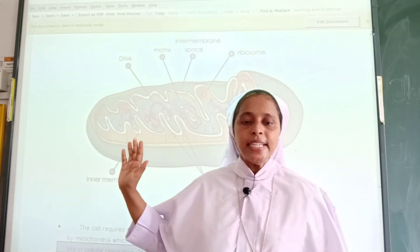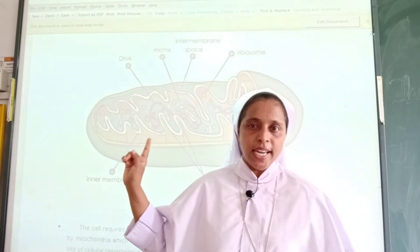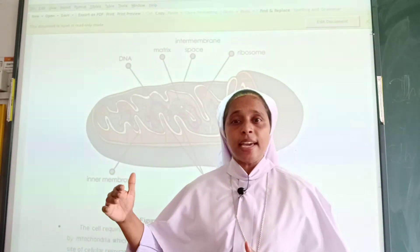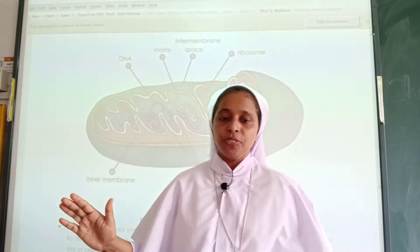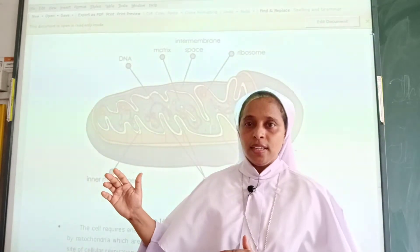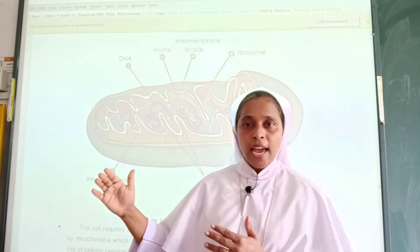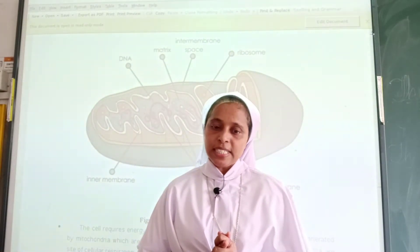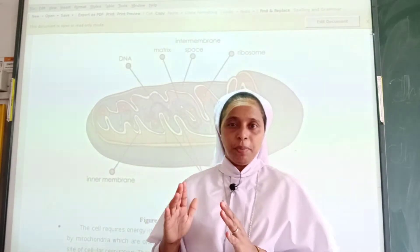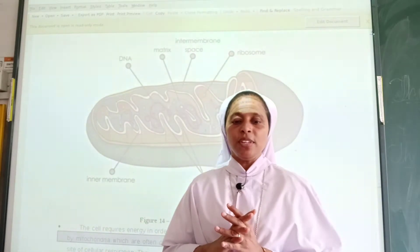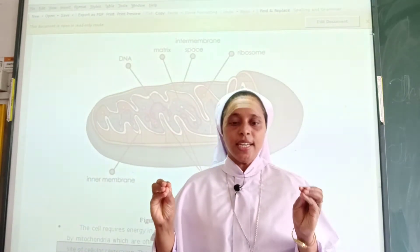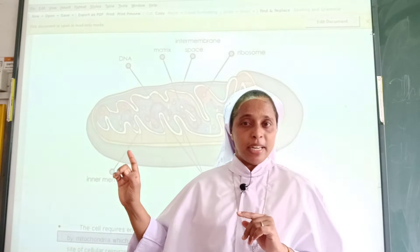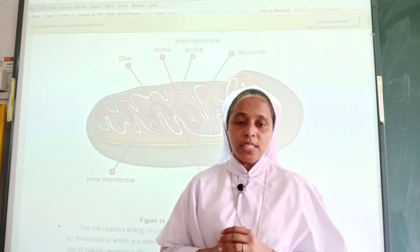Mitochondria are the site of cellular respiration. They use oxygen from the air to oxidize the carbohydrates, thereby releasing energy. The mitochondria will generate ATP — Adenosine Triphosphate — which are energy-giving molecules of the cell. That is why ATP is called the energy currency of the cell.